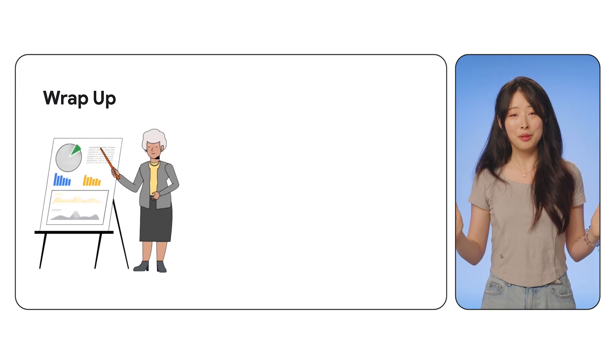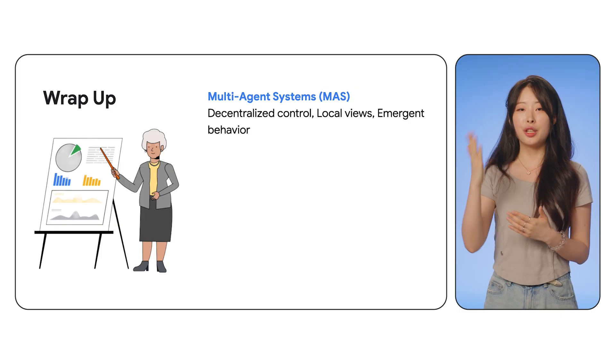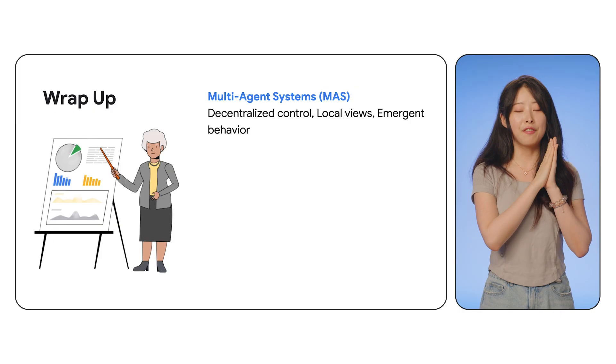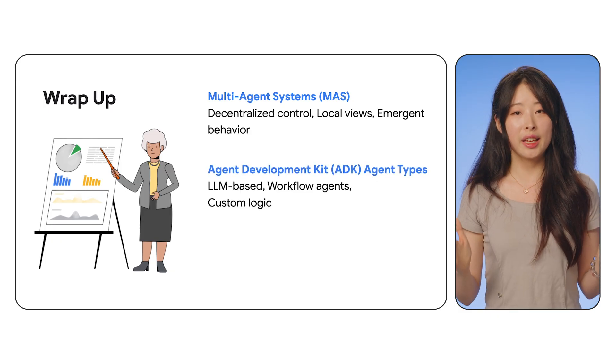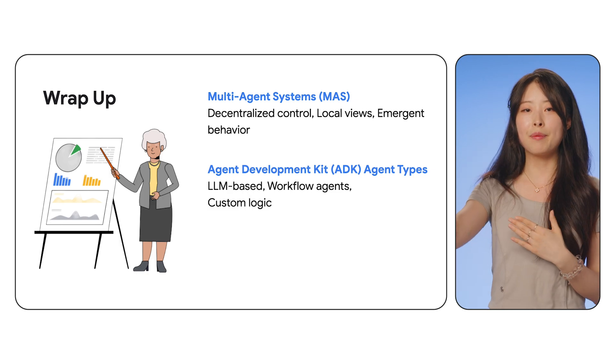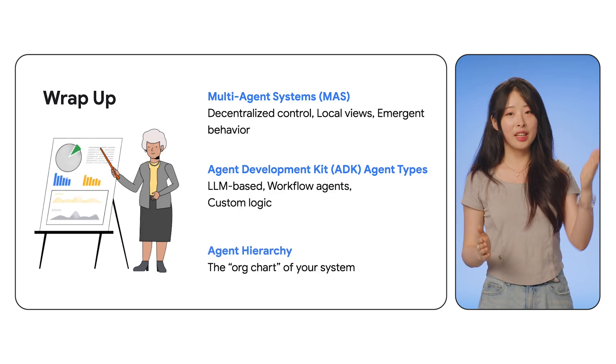Let's wrap up today's episode. We talked about what exactly a multi-agent system is — they are decentralized, each agent only has a local view, and complex behavior emerges globally. We also talked about ADK support with three categories: LM agent, workflow agent, and custom agent. And lastly, we covered agent hierarchy, the org chart of your system. This is the foundation. Don't forget to check the link in the description to practice. In the next episode, we'll go deeper into workflow orchestration and how agents actually communicate with each other. See you there.